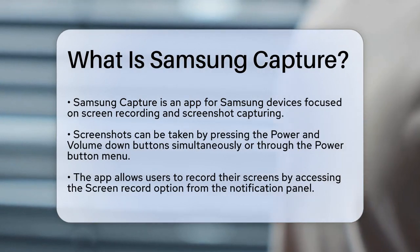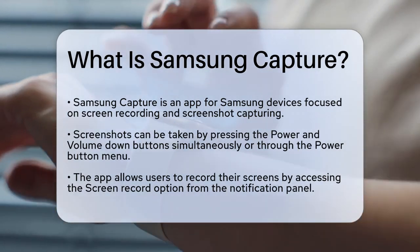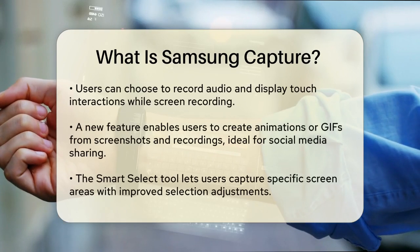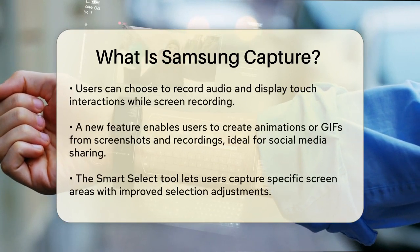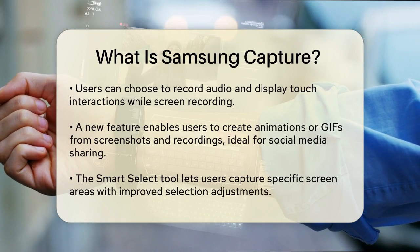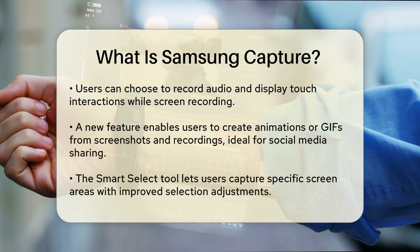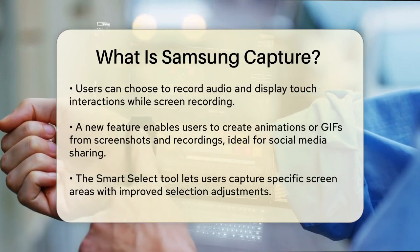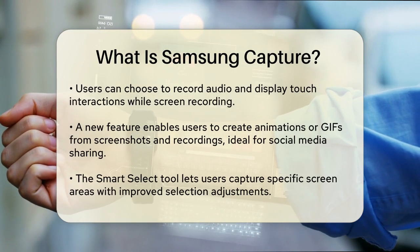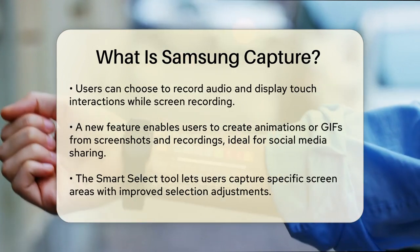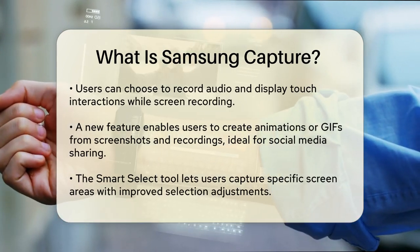Samsung Capture also allows you to record your screen. To do this, you swipe down twice from the top of your screen, tap the screen record option, and choose whether you want to record audio and show touches on the screen. Once you start recording, you can stop it by swiping down from the top and tapping the screen recorder notification.